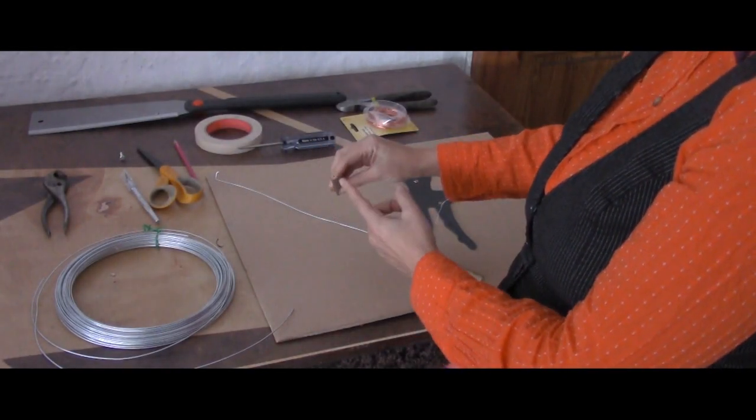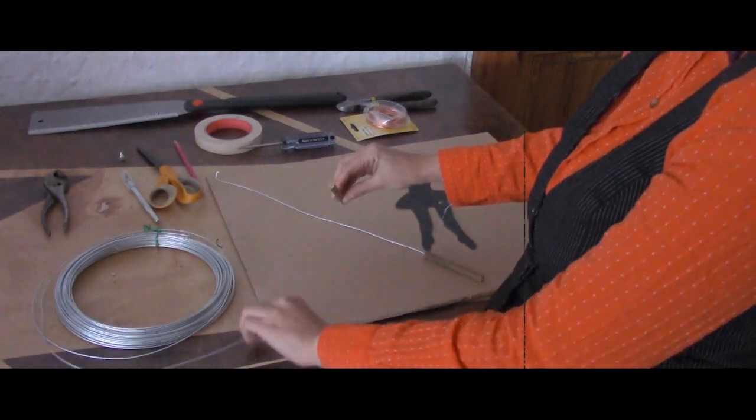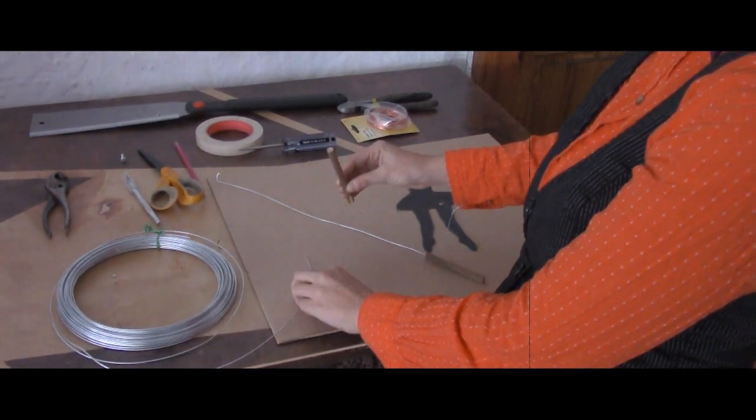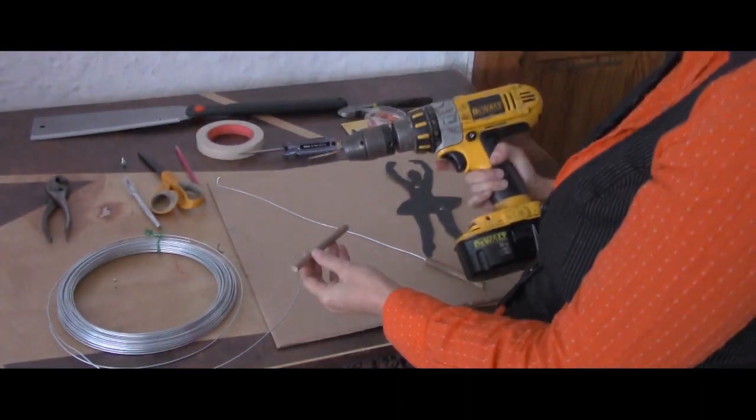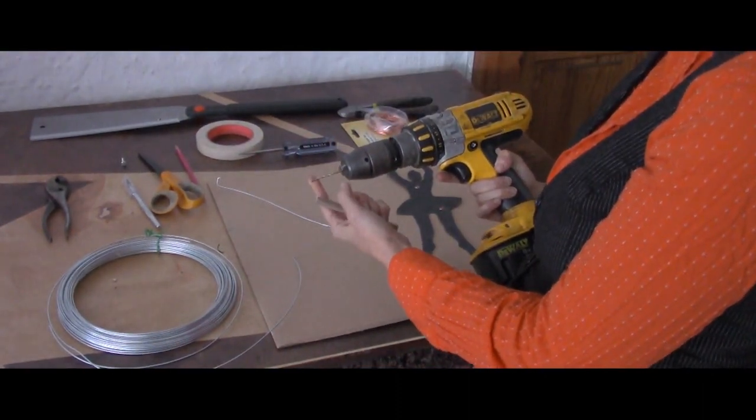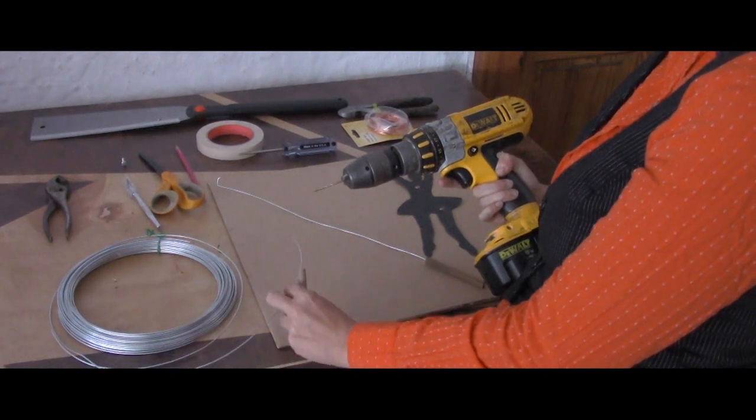Now that we have our handle, we're going to need to make a hole that will fit our wire. For this, you're going to need a drill. Make sure that you get a bit that matches the size of your wire.